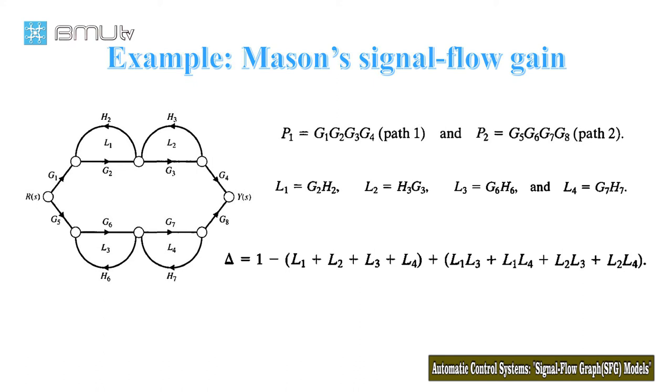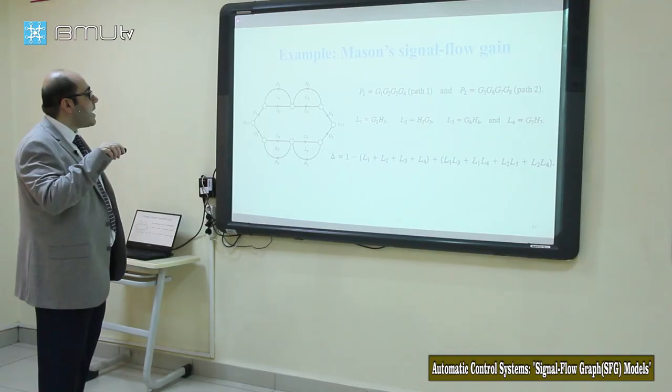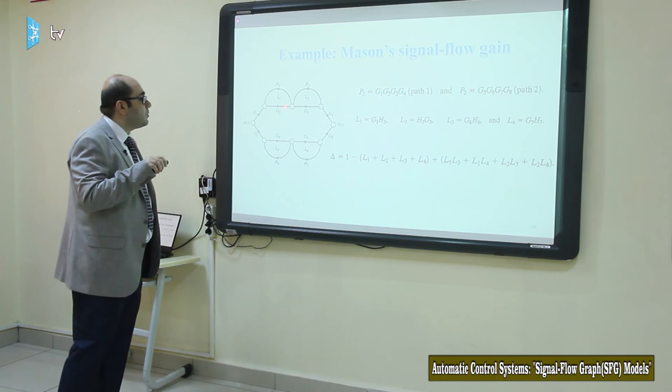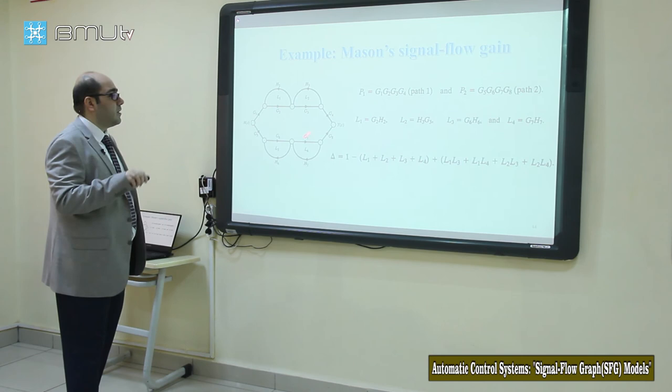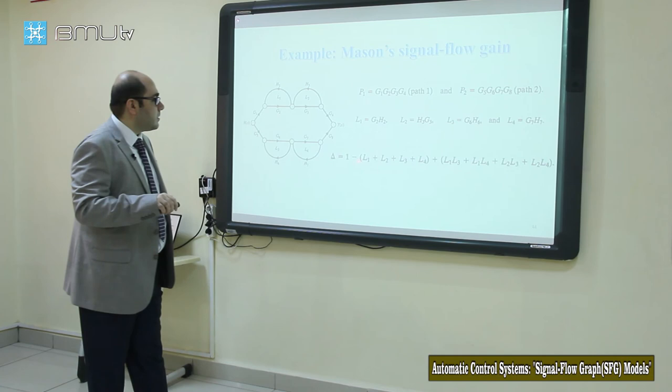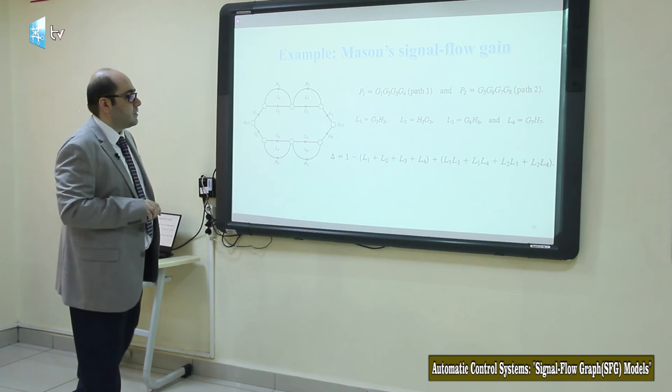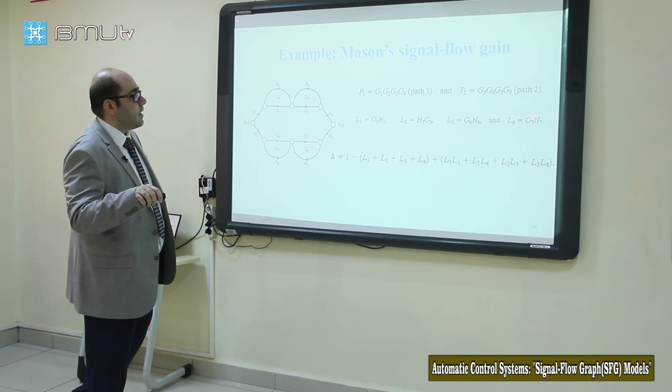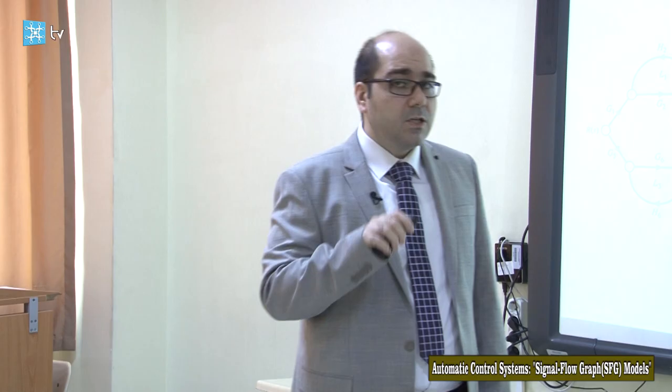For the third term we need the sum of products of three non-touching loops. There are no three loops that are mutually non-touching in this signal flow graph, so we don't write anything. The determinant delta of this system is calculated using these terms — substituting L1, L2, L3, L4 (the gain of each loop) into the determinant formula.